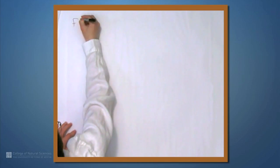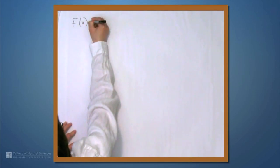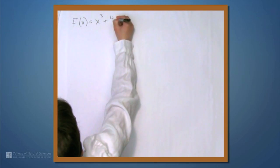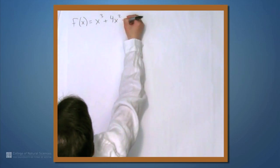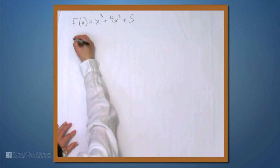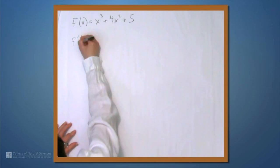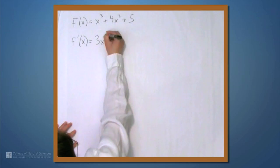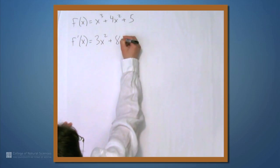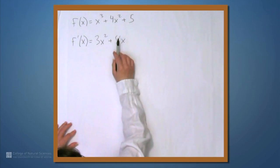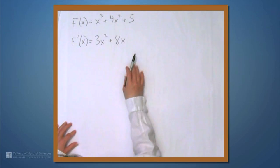So, let's rewrite the function. It's f of x equals x cubed plus 4x squared plus 5. Now, the derivative, f prime, is 3x squared plus 8x. Derivative of x cubed, derivative of 4x squared, and derivative of 5 is 0.